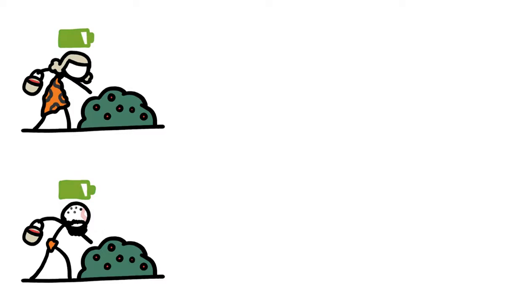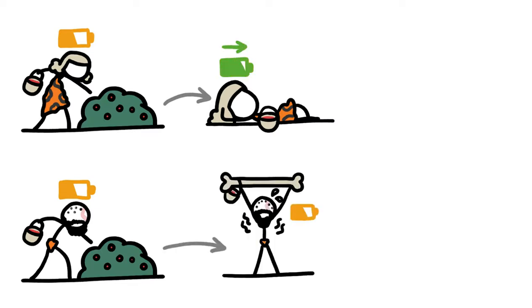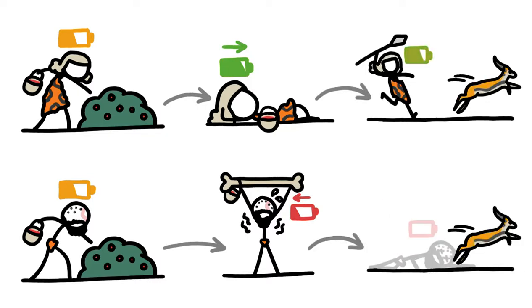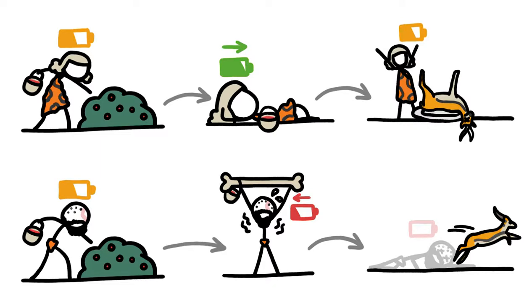Way back in the day, we spent tons of energy finding enough food to survive. So ancient people who took it easy when they weren't searching for food replenished more energy than people who also did pointless physical activity. As a result, they weren't as likely to get exhausted while hunting and gathering, and thus were more likely to succeed in finding food and surviving.